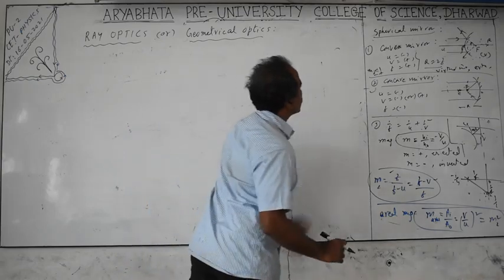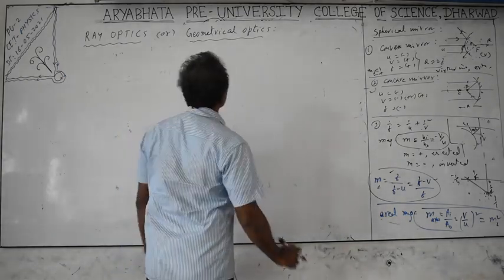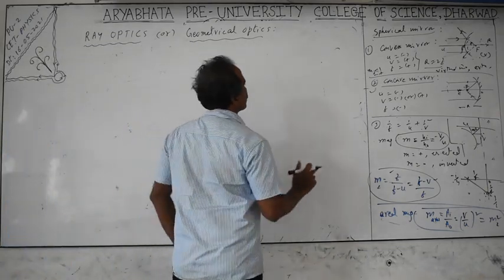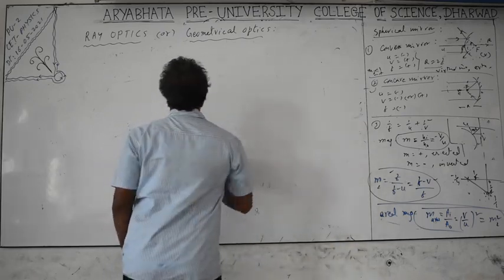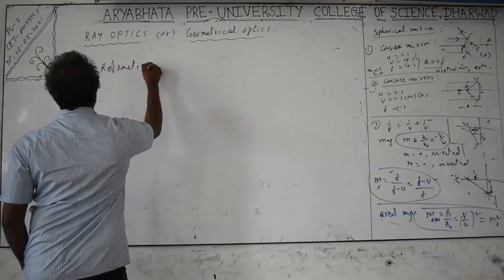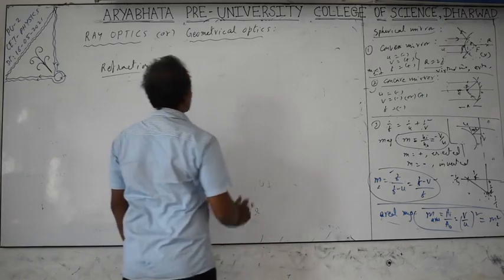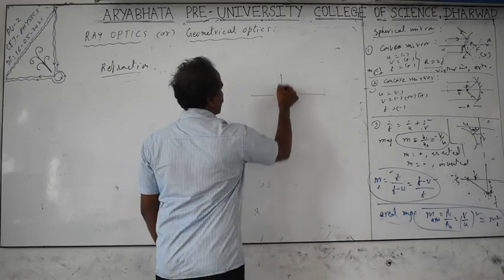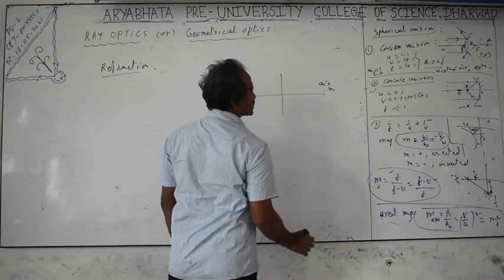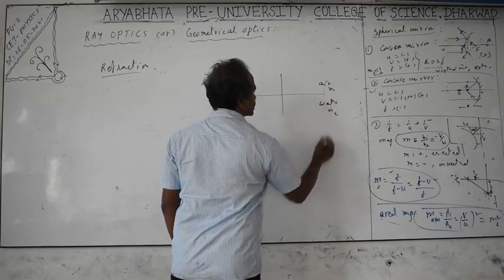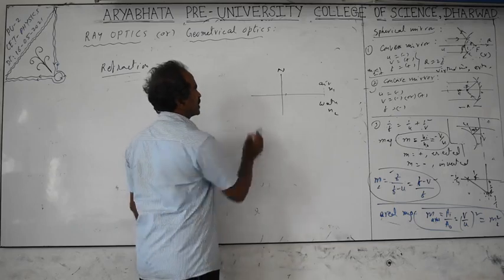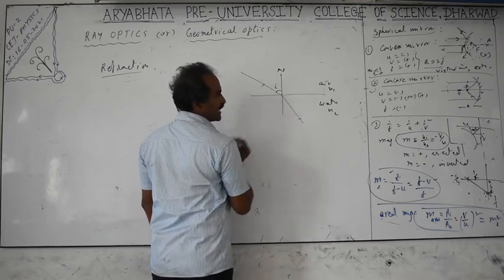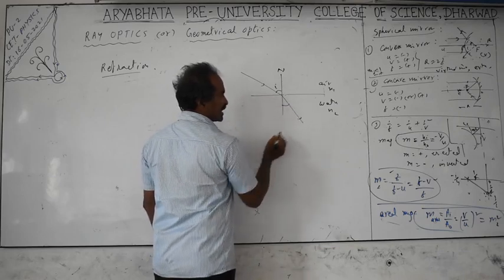Next is refraction. Refraction is when light passes from one medium to another; reflection is when light returns to the same medium. In refraction, consider a first medium with refractive index n1 (e.g., air) and a second medium with refractive index n2 (e.g., water or glass). The normal is perpendicular to the surface. The angle between the incident ray and the normal is the angle of incidence i; the angle between the normal and the transmitted ray is the angle of refraction r.